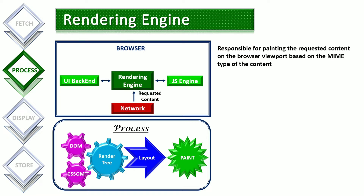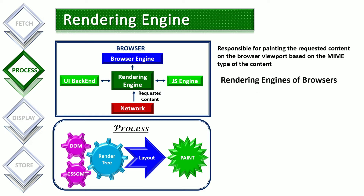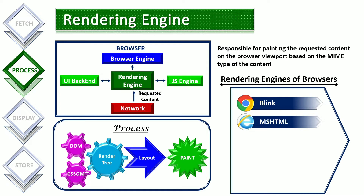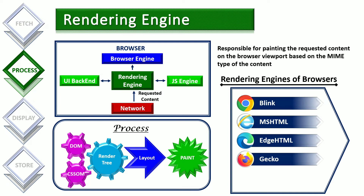Once the layout is completed, the paint operation will define the style of each element in the render tree, and the final output of the paint operation will be sent to the browser engine for display. Each browser has its own rendering engine, and they are mostly written in C++. Google Chrome uses Blink, Internet Explorer uses MSHTML, Microsoft Edge uses EdgeHTML, Mozilla Firefox uses Gecko, and Safari uses WebKit.